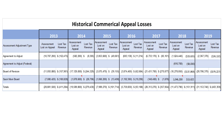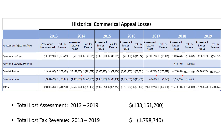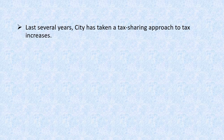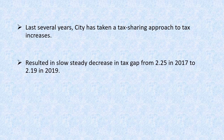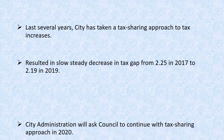Over the last several years, the city has taken a tax-sharing approach to tax increases — an initiative introduced by Council. The rationale was to slowly and steadily decrease the tax gap between residential and commercial. In 2017 that gap was 2.25 times; in 2019 it's 2.19 times, so it has been a slow, steady decrease. Administration will ask Council again this year to continue that tax-sharing approach, as we feel it is moving taxes in the right direction.